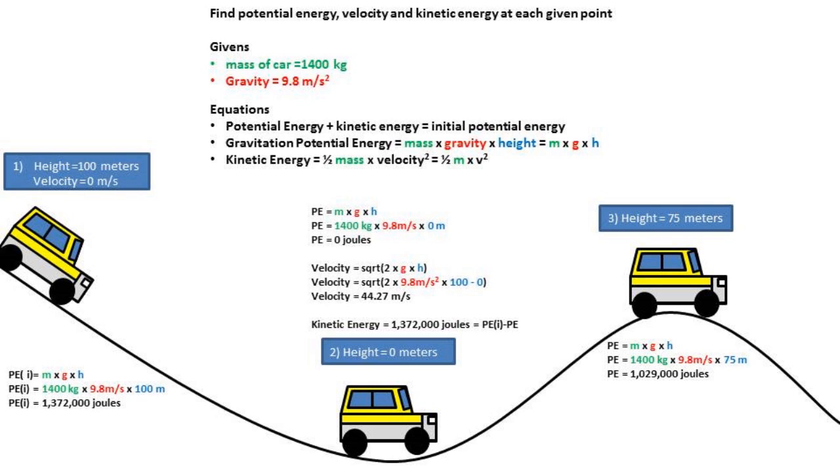Finally, for the third point, we once again plug our numbers into the potential energy equation of mass times gravity times height, and we get 1,029,000 joules. We can then plug our numbers into the velocity equation of square root 2 times gravity times height delta to get a velocity of 22.14 meters per second. Once again, if you are like me and think in imperial, this is equal to about 49.5 miles per hour.